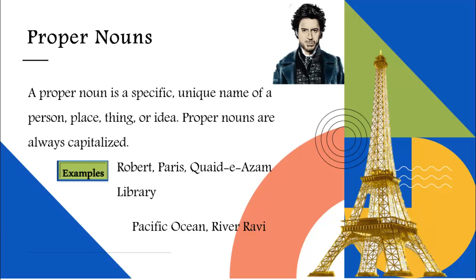Proper nouns include names of weekdays, months of the year, towns, cities, streets, states, countries, and brand names.